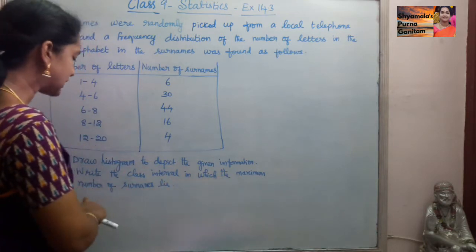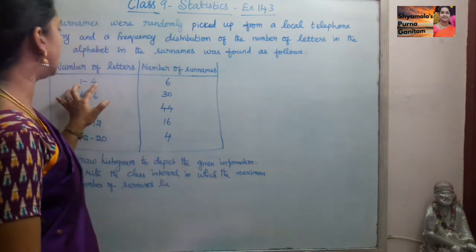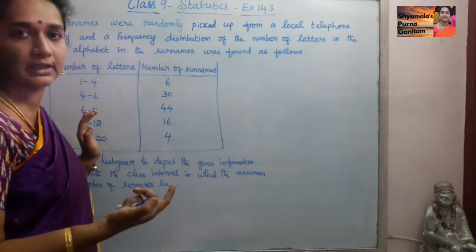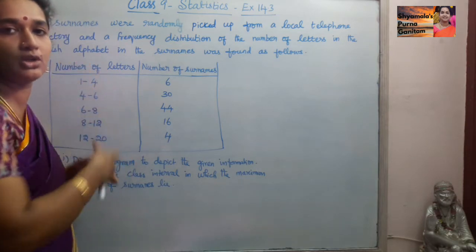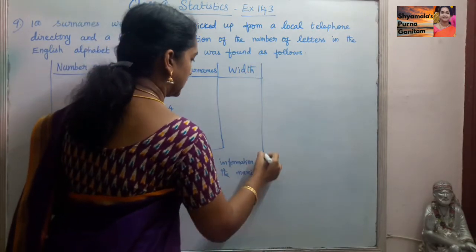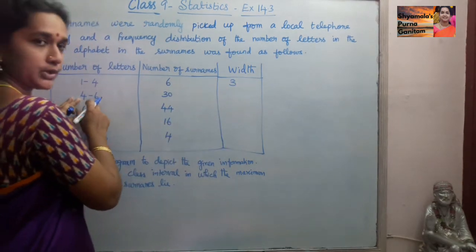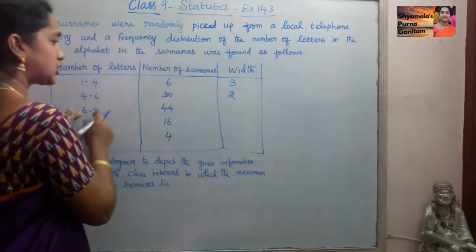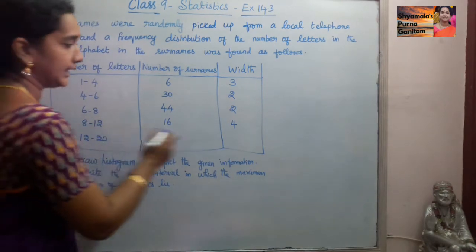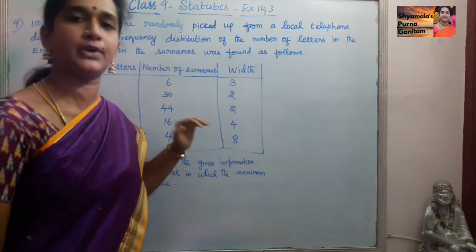We also need to write the class interval in which the maximum number of surnames lie. As we did in the previous sum, if we check the class interval — the width of the class varies from one distribution to the other. The width for 1 to 4 is 3, for 4 to 6 it is 2, for 6 to 8 it is 2, for 8 to 12 it is 4, and for 12 to 20 it is 8.